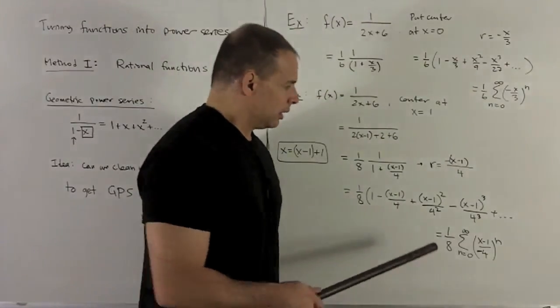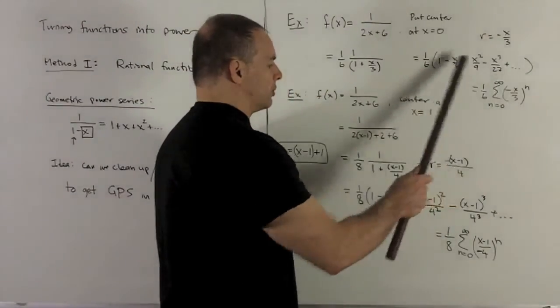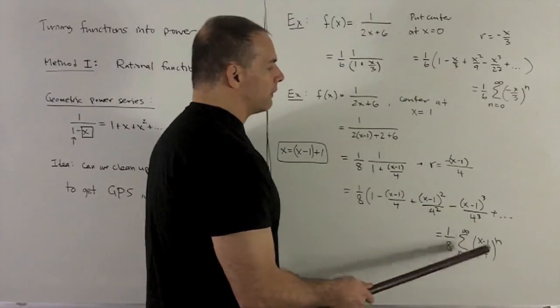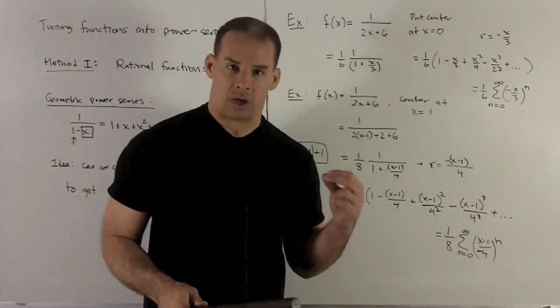So again, note our power series look nothing alike because the centers are different. But where their intervals of convergence overlap, they're going to be equal as functions.